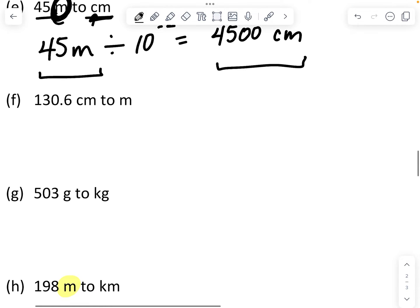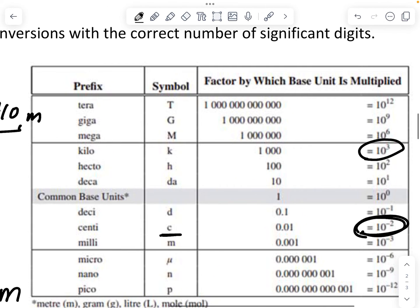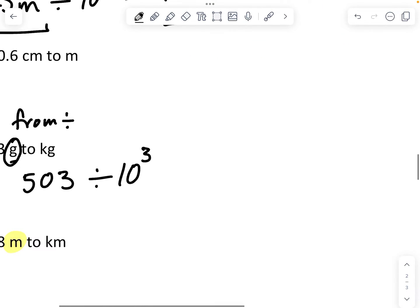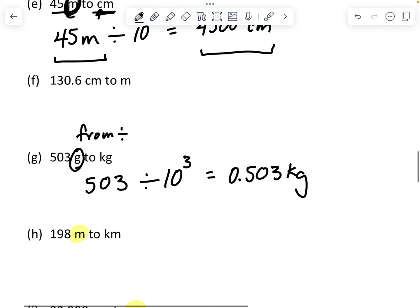If we went here, this is grams to kilograms. Grams are the base unit. So this is from. This will be another division. So if I have 503 grams, I'm going to divide by 10 to the 3. Because for kilos, it's 10 to the 3. So I'm going to end up getting 0.503 kilograms. So 503 grams is going to be 0.503 kilograms.